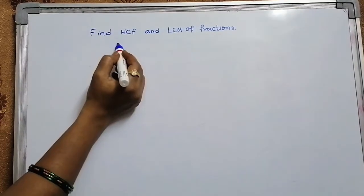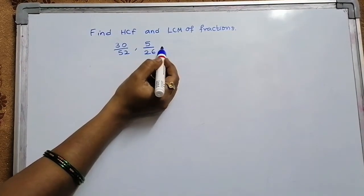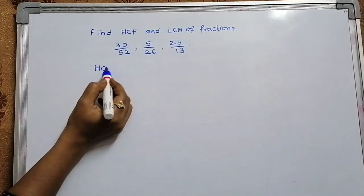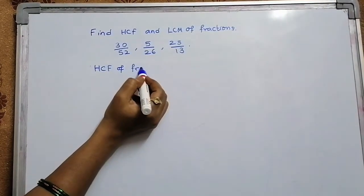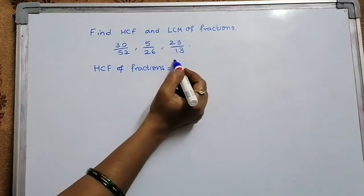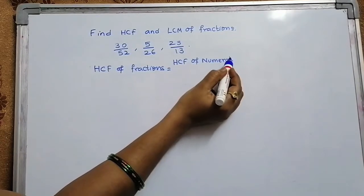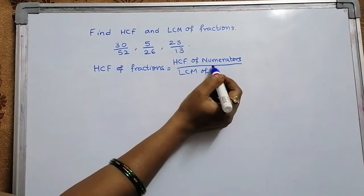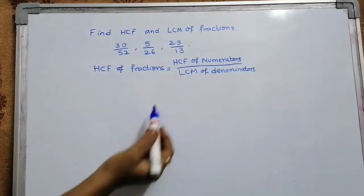The fractions here I am going to take are 30/52, 5/26, and 25/13. The formula is: HCF of these fractions is given by HCF of numerators whole divided by LCM of denominators. Let us solve this.